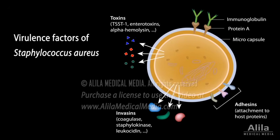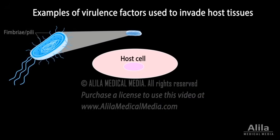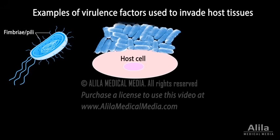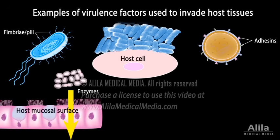Virulence factors are molecules or structures that enable the pathogen to invade host tissues or evade immune defense. Some bacteria use adhesive hair-like projections, called fimbriae or pili, to bind to host cells and establish a starting point for tissue invasion. Others use specialized molecules called adhesins for the same purpose.